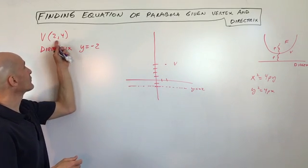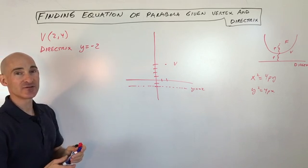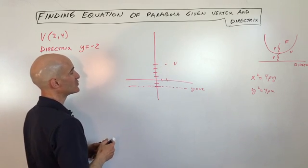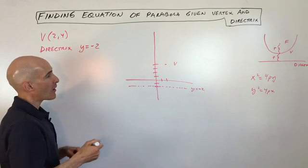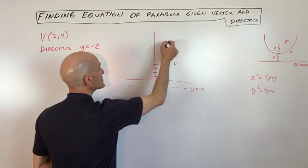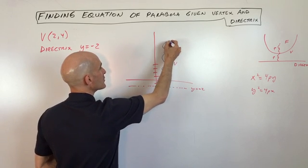So here we've got the vertex is at 2, 4 and the directrix is at y equals negative 2. So here's our directrix, y equals negative 2. Here's our vertex at 2, 4. And our focus is going to be, because this distance here is the same as the distance from the vertex to the focus, our focus is going to be up here.